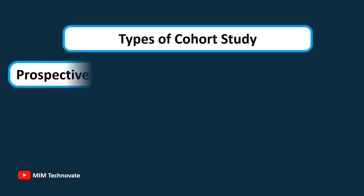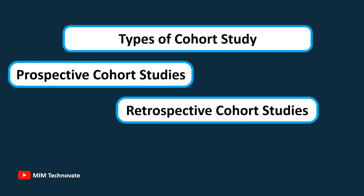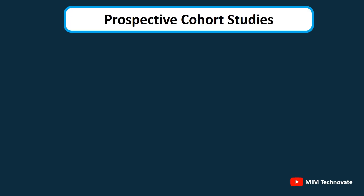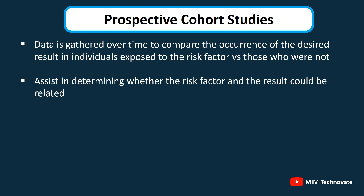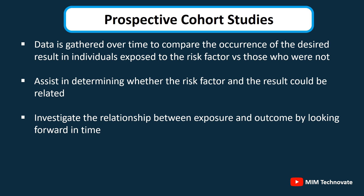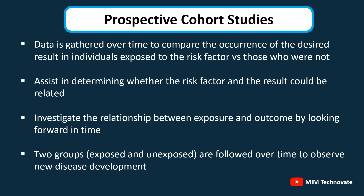Types of cohort study. Prospective cohort studies and retrospective cohort studies are two of the many different cohort study types, including open, closed, and dynamic. In prospective cohort studies, data is gathered over time to compare the occurrence of the desired result in individuals exposed to the risk factor versus those who were not. Two groups — exposed and unexposed — are followed over time to observe new disease development.